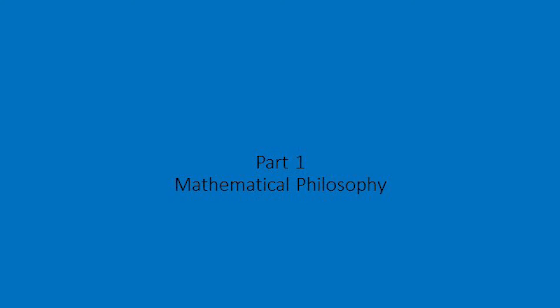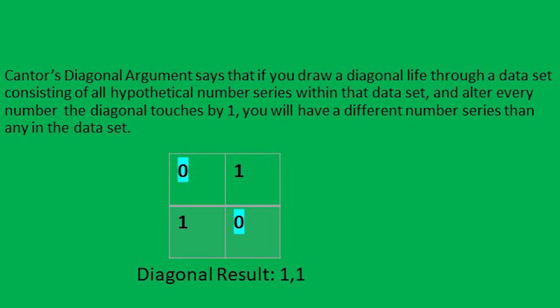If you haven't seen Veritasium's video, here is a short recap. Cantor argued that the domain of real numbers between 0 and 1 is undecidable because if you take a diagonal line through that set, and then alter the value of each individual number series the diagonal comes into contact with by 1, then you wind up with a value that is different from every other series in that set. This is known as Cantor's diagonal argument.